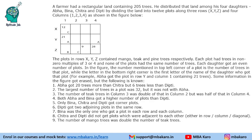Hello everyone, welcome to Aptitude Jab. This set from CAT 2020 slot 3 DILR says that a farmer had a rectangular land containing 205 trees.